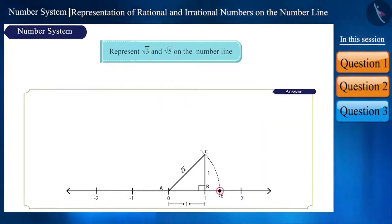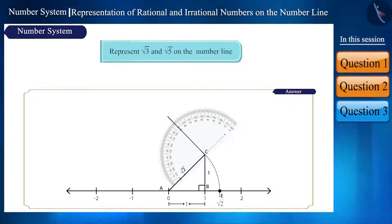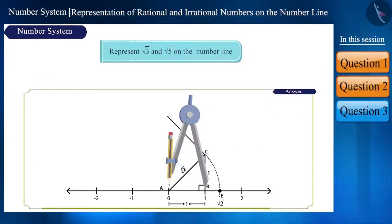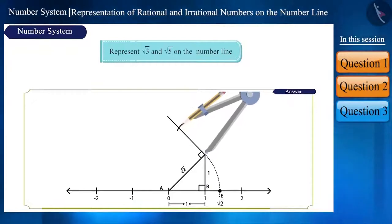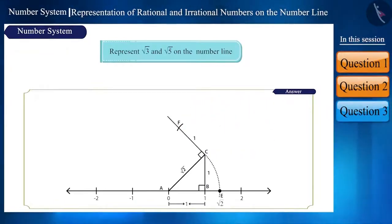Here, point E represents √2. We will now construct a perpendicular on line AC. Now measure the distance of one unit using a compass and draw an arc from point C on the perpendicular which cuts it at point F. Now draw a line joining center point A and point F. If you look carefully, here we are getting a right-angled triangle ACF.